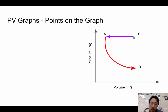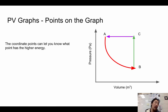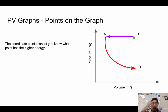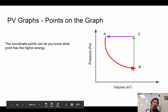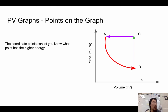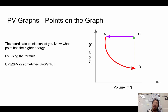On PV graphs, the coordinates — pressure and volume — can tell you which point has the highest energy. Multiply the coordinates for each point: whichever has the greatest product has the most energy and the highest temperature. If A and B are on the same isotherm, they are equal in energy. Point C, which has the greatest pressure and greatest volume, gives the greatest product, so it has the highest energy. The equation to use is (3/2)PV, or (3/2)NRT, depending on what the problem gives you.